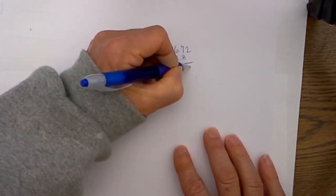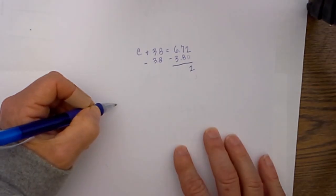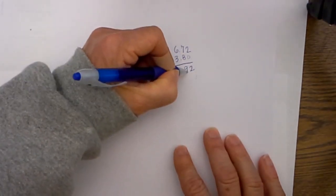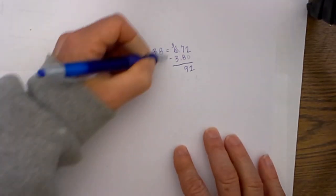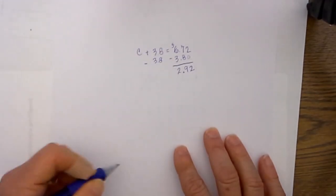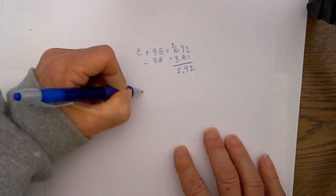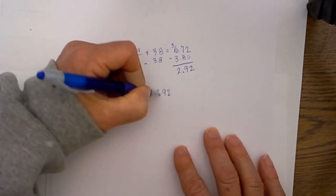There is nothing for the two here so I bring the two down. If you would like you can look at it as a zero. I then go 7 minus 8 is 9. I had to borrow one so this becomes a 5, 5 minus 3 is 2. Move the decimal down so it is 2.92. So c equals 2.92.